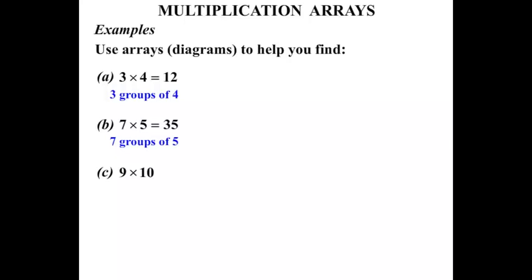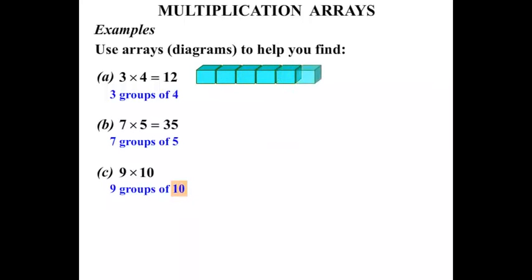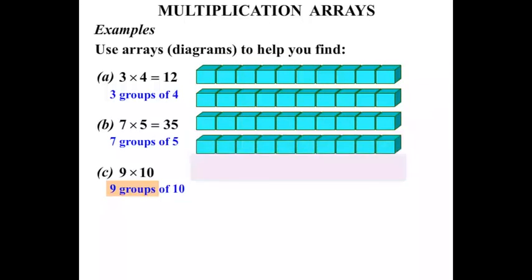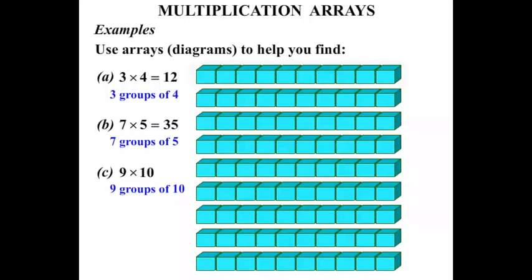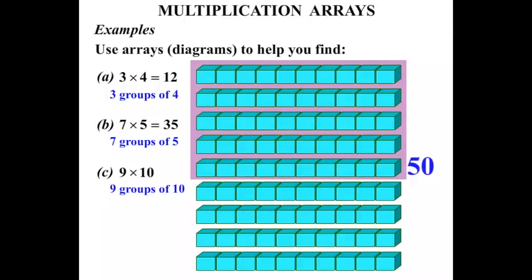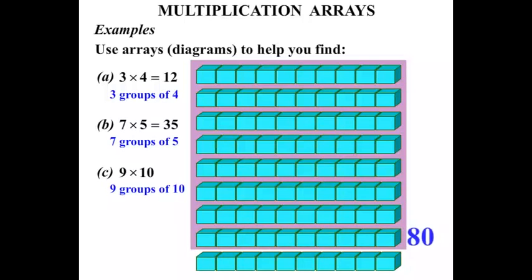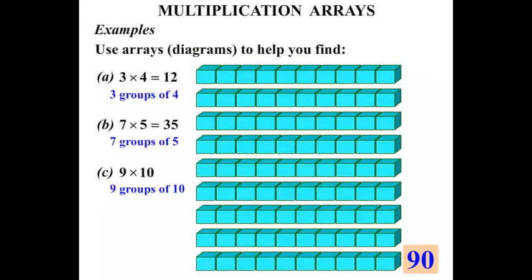Part C: nine times ten — or nine lots of ten, same as nine groups of ten. So let's think of ten; we'll use ten little cubes this time — one through ten. So there's our one group, and we want nine groups: one, two, three, four, five, six, seven, eight, nine. We've got nine groups of ten. Let's count them: ten, twenty, thirty, forty, fifty, sixty, seventy, eighty, ninety. So ninety is our answer. Nine times ten, or nine lots of ten, equals ninety.